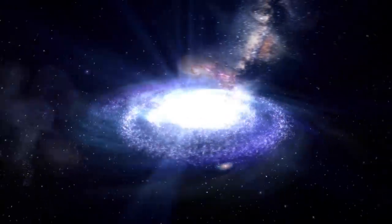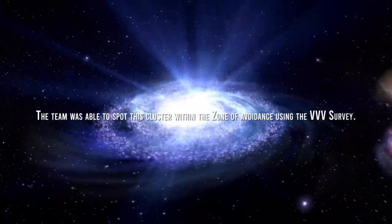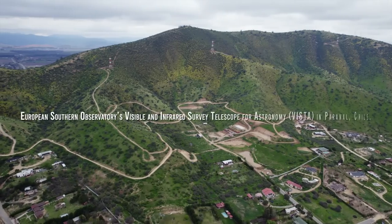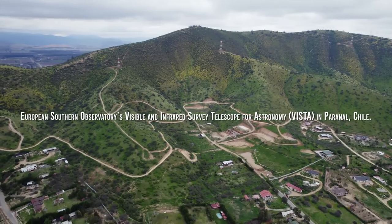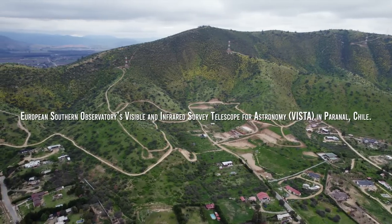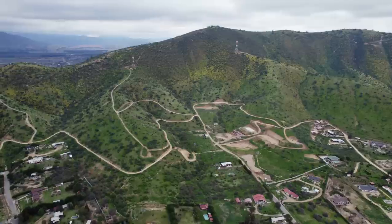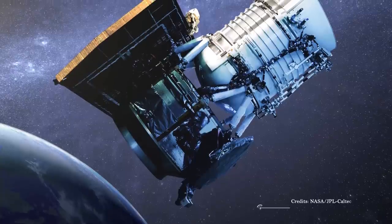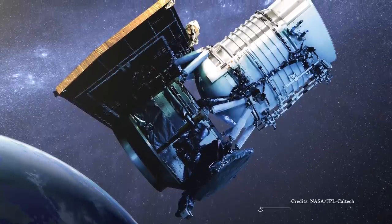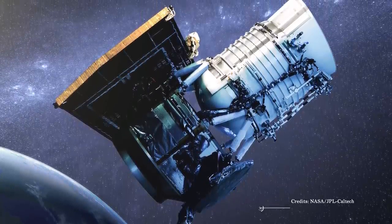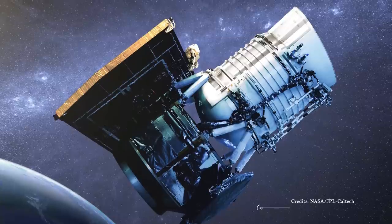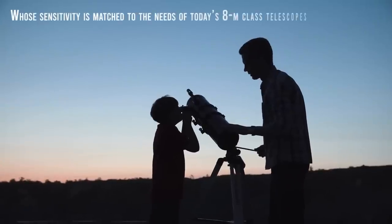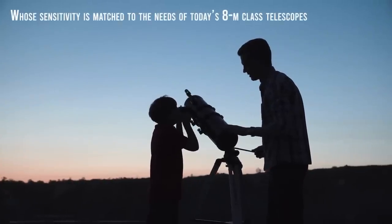The team was able to spot this cluster within the zone of avoidance using the VVV Survey, a project that scans the Milky Way bulge at infrared wavelengths using the European Southern Observatory Visible and Infrared Survey Telescope for Astronomy in Paranal, Chile. As was stated in the project, the main purpose of the Wide Field Survey Telescope and Camera Facility is to perform extensive surveys of the southern skies, whose sensitivities match the needs of today's 8-meter-class telescopes.